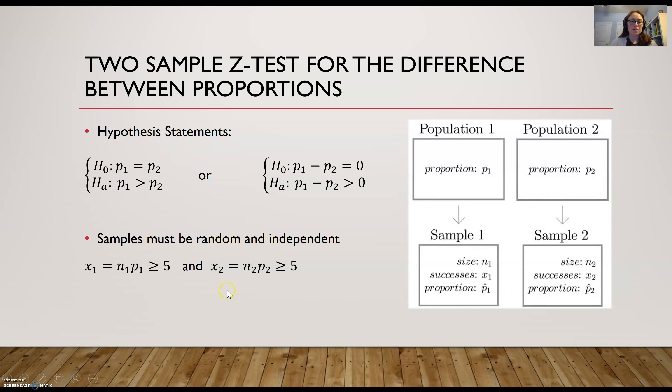And some of the requirements for the test over here on the bottom left, X1, which you can calculate by taking N1 times P1, needs to be at least 5, and then the same thing for the second sample as well.